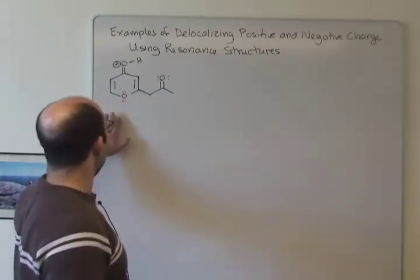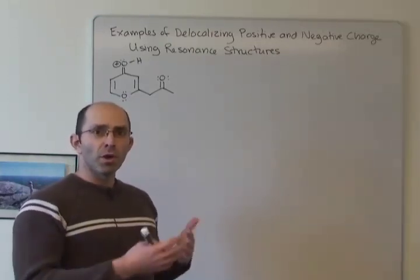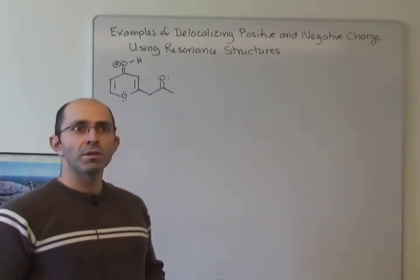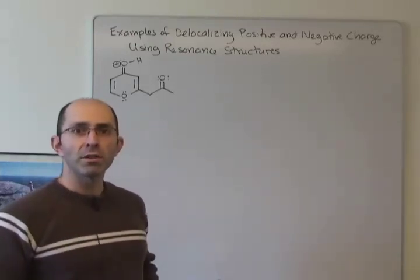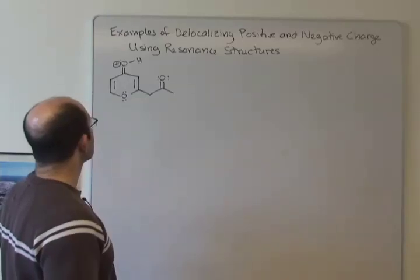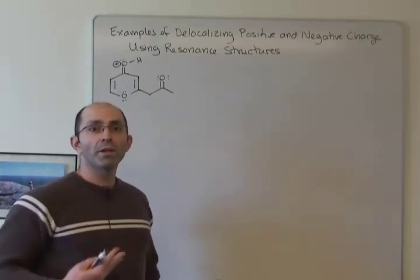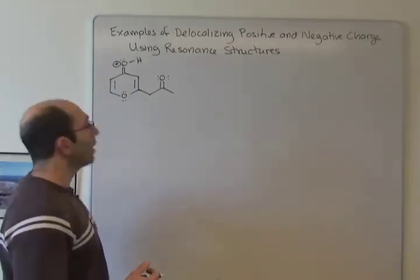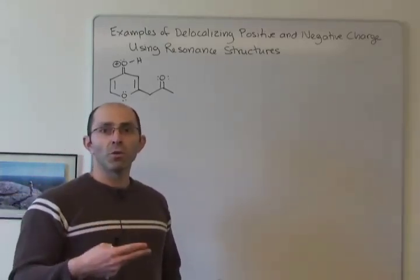When you think about a molecule like this, you want to think about how you can spread that charge around, make the molecule more stable, and think about how to do that using curved arrows. That's the key thing — using curved arrows to do delocalization. In this molecule, the positive charge is on oxygen, and that oxygen is going to want electrons to come toward it to get rid of that positive charge. Whenever we're moving electrons, we're moving either lone pair electrons or electrons in p orbitals.